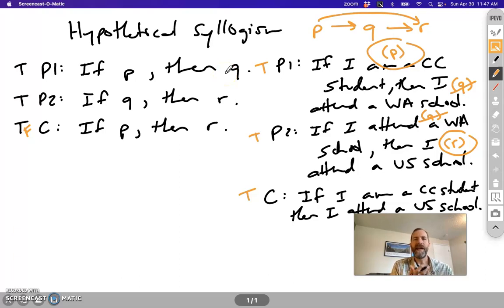So this is a valid argument form. A false conclusion would mean one or two false premises. But as long as those premises are all true, the conclusion follows necessarily as true.